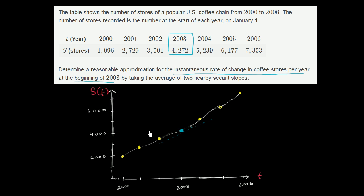So for example, we could find the slope of this secant line right over here as we go from 2002 to 2003. And then we can find the slope of this secant line as we go from 2003 to 2004. And if we average those, that should be a pretty good approximation for the instantaneous rate of change in 2003. So let's do that.